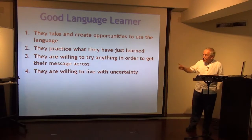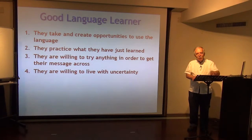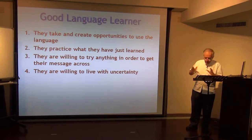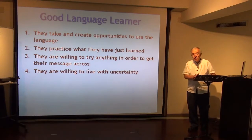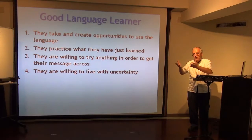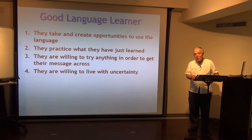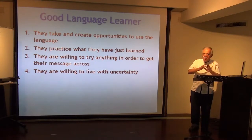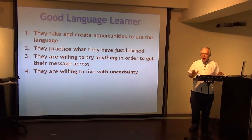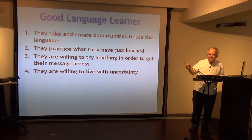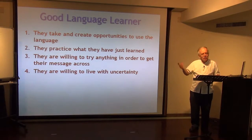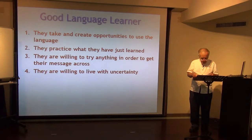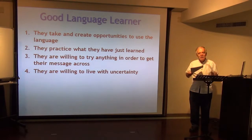Fourthly, and this is interesting, they're willing to live with uncertainty. In the early days of learning Chinese, there's a lot we don't understand. Many students say, 'There must be a better textbook, a better teacher who can explain it clearly.' But the good language learner says, 'I've got a pretty good idea of what the bǎ structure is doing — I'm sure it'll become clearer later on.' And sure enough, it does. They're willing to live with uncertainty — what we call a tolerance of ambiguity.